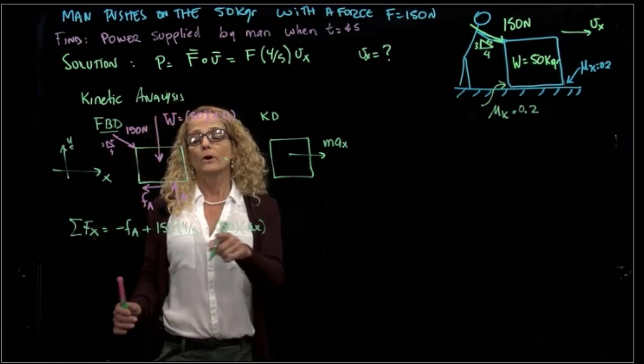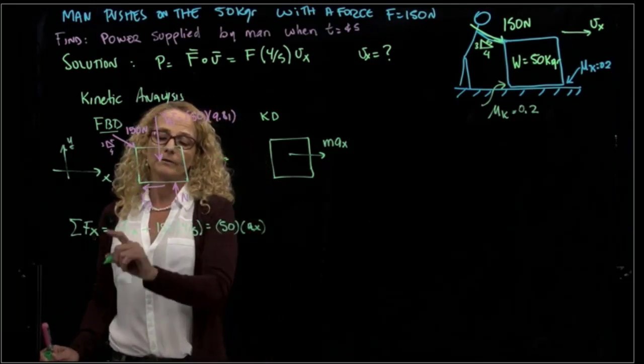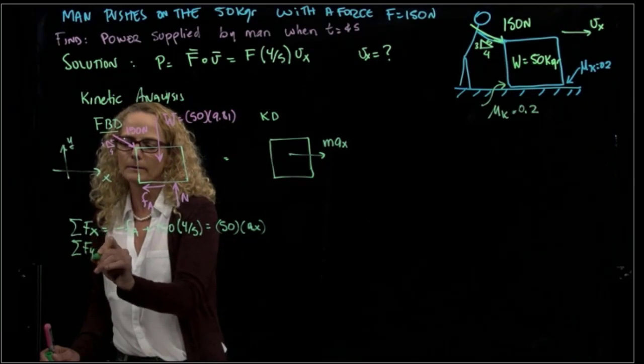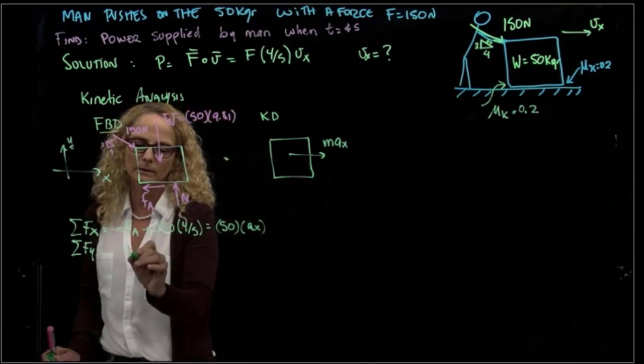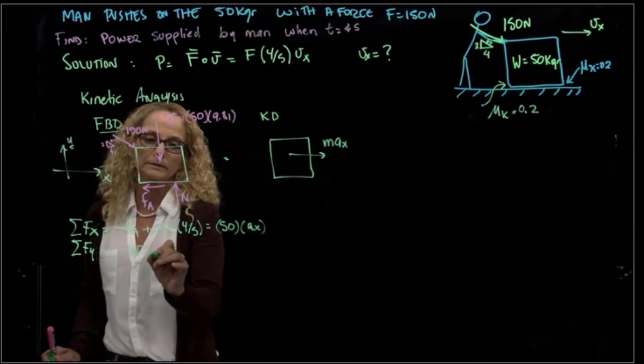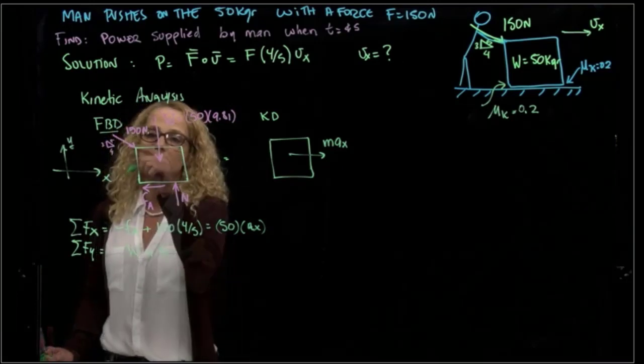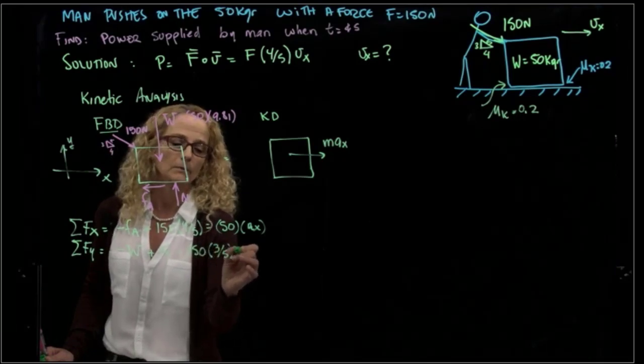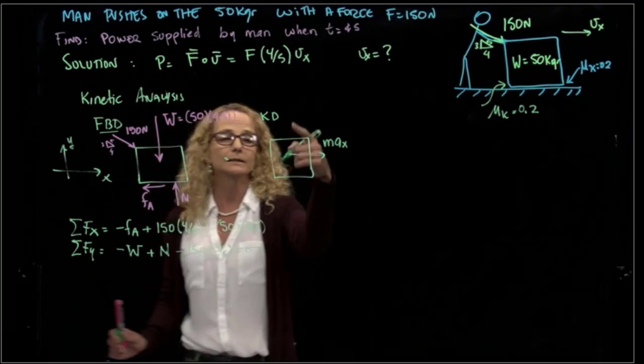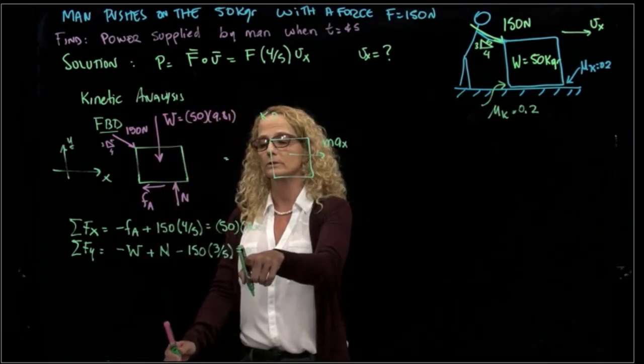But we do not have fa, so now we add forces in y, and then we have negative the weight, plus the normal force, the applied force, which is negative 150 times 3/5, equals 0. We don't have any acceleration in y, that's why this equation is 0.